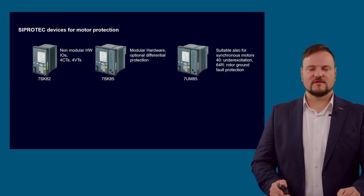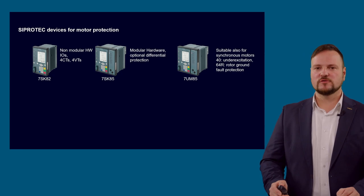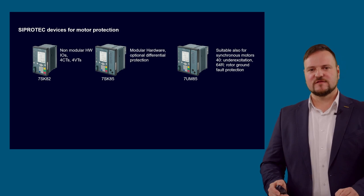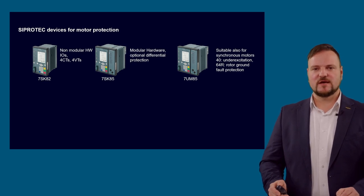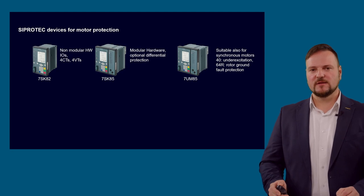The next one is the 7UM, and these have the full scope of protection functions for generator, motor and transformer as well. For this device, for example, under excitation and rotor ground fire protection is provided and available in the library.